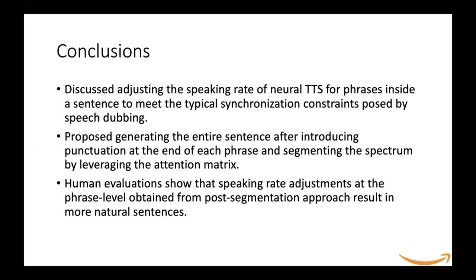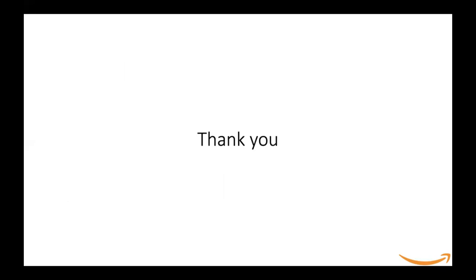In conclusion, we discussed adjusting the speaking rate of neural text-to-speech for phrases inside a sentence to meet the typical synchronization constraint posed by speech dubbing. We also proposed generating the entire sentence after introducing punctuation at the end of each phrase and segmenting the spectrogram by leveraging the attention matrix. Our human evaluation shows that speaking rate adjustment at the phrase level obtained from the post-segmentation approach results in more natural sentences. Thank you, and I'm open to questions.